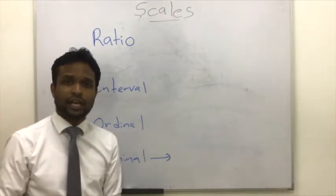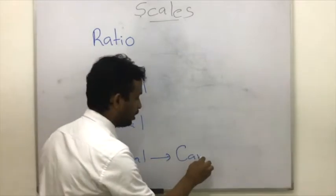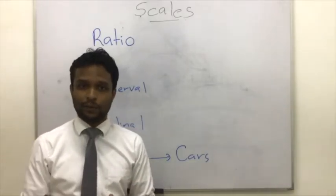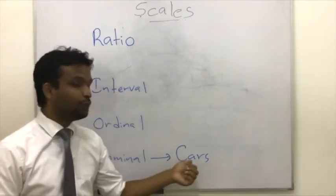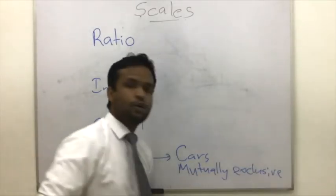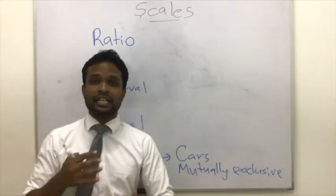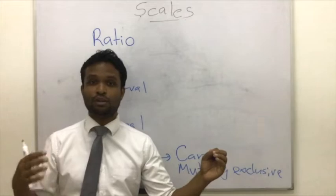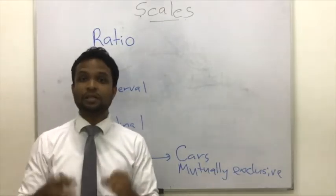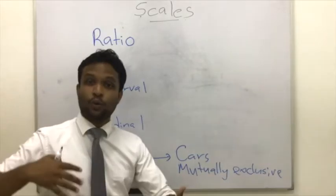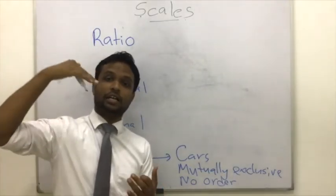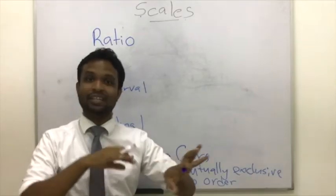In the nominal scale, each value has its own name — for example, blue class, red class, yellow class, white class. Every value has a name. We call these values mutually exclusive, meaning they are independent from each other. Blue class does not depend on yellow class — totally independent values. Another important property of the nominal scale is that there is no order between values. We can't say that blue color is higher than red color; they are broadly independent, different values.